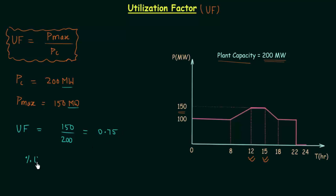In percentage, utilization factor we have 75%. So we are utilizing the plant 75% only. We are not utilizing it 100%.